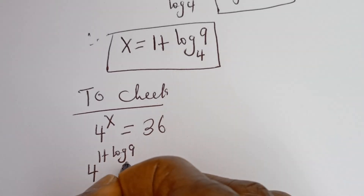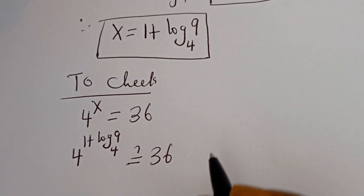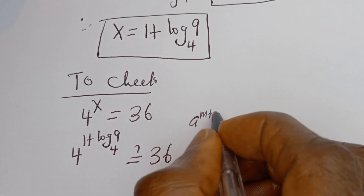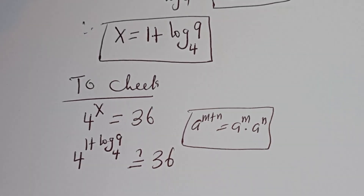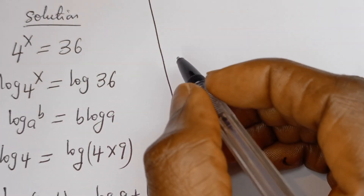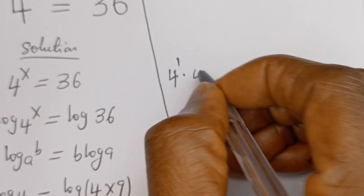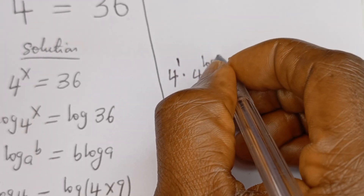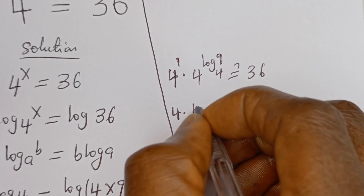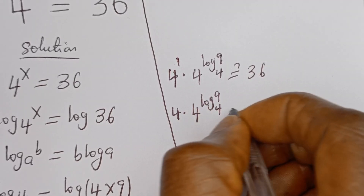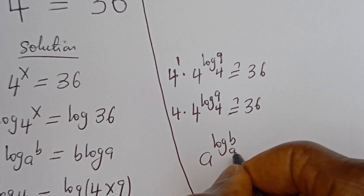This must be equal to 36. Take note that if you have a to the power of m plus n, this is equal to a to the power of m multiplied by a to the power of n. Then we have 4 to the power of 1 multiplied by 4 to the power of log 9 base 4 must be equal to 36. If you have a to the power of log b base a, this is equal to b.